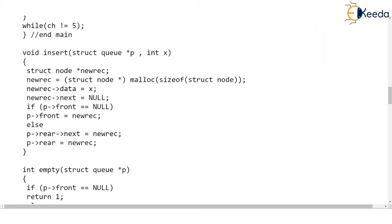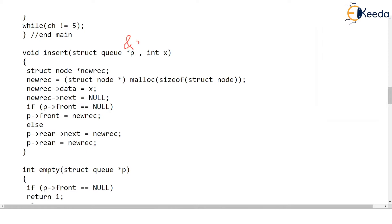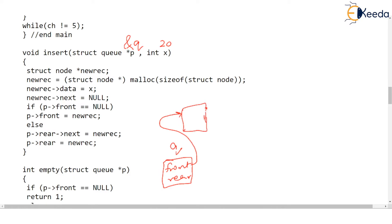Now let's practice — what if we call insert a second time? We currently have only 10 in the queue. We again pass the address of the queue and 20 has to be inserted. The queue Q has front and rear: front is pointing to the node storing 10, that node has an associated next which is null, and rear is also pointing to the same node. Now let's try to insert 20. Again P is a pointer which stores the address of the queue, so P points to Q.